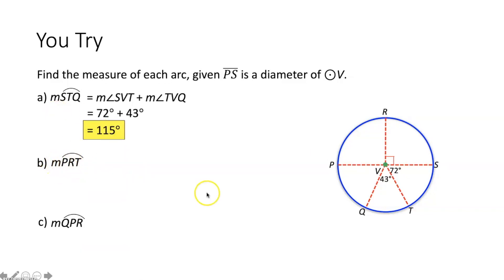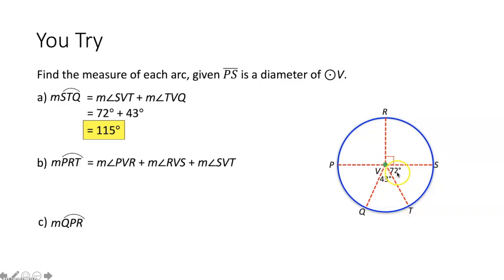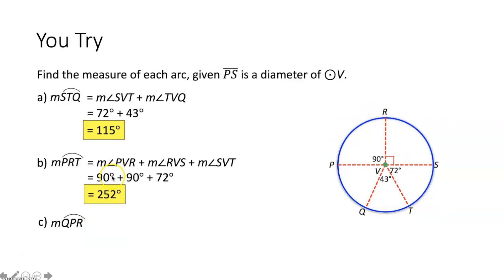Next, we find the measure of arc PRT, which is a major arc because it's greater than 180 degrees. The measure of arc PRT equals the measure of angle PVR plus the measure of angle RVS plus the measure of angle SVT. Angle SVT is 72 degrees and angle RVS is 90 degrees. Since segment PS is a diameter of circle V, angles PVR and RVS form a linear pair and are supplementary, so angle PVR equals 180 minus 90, which is 90 degrees. Adding these three angles together, the measure of arc PRT is 252 degrees.